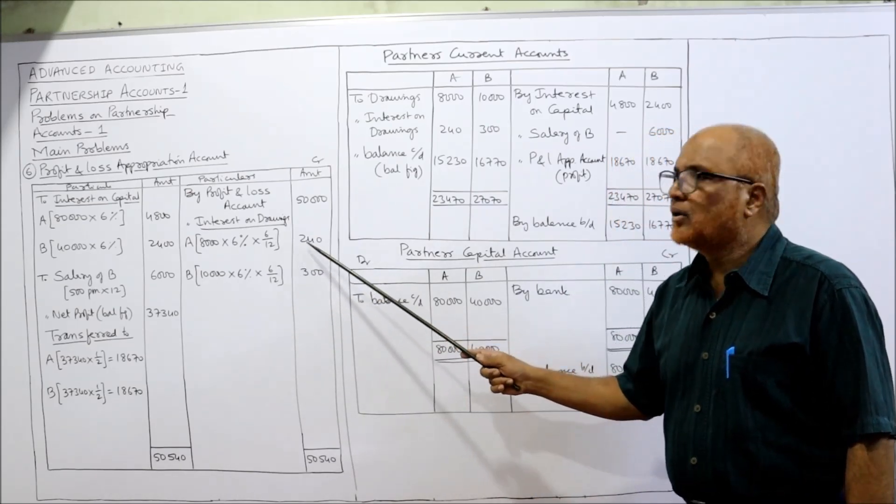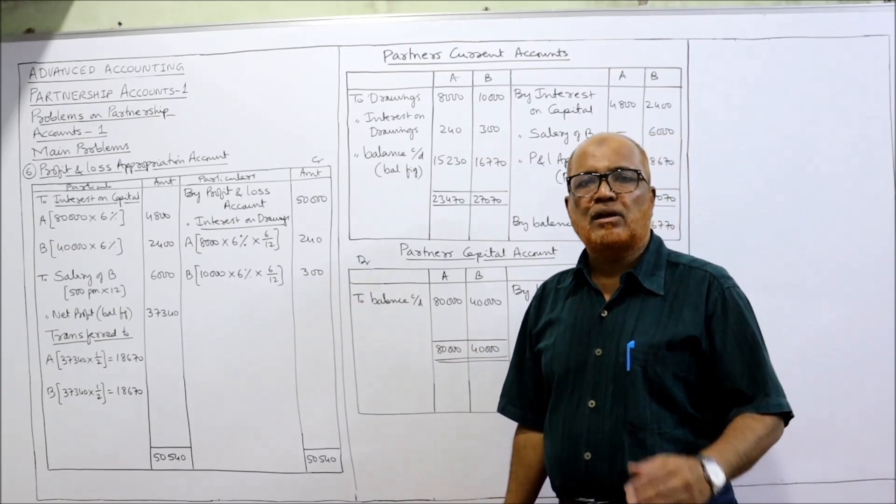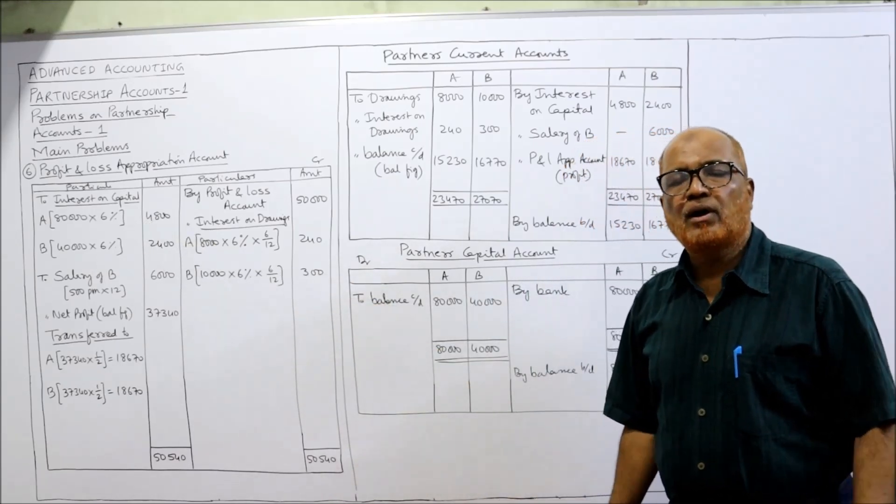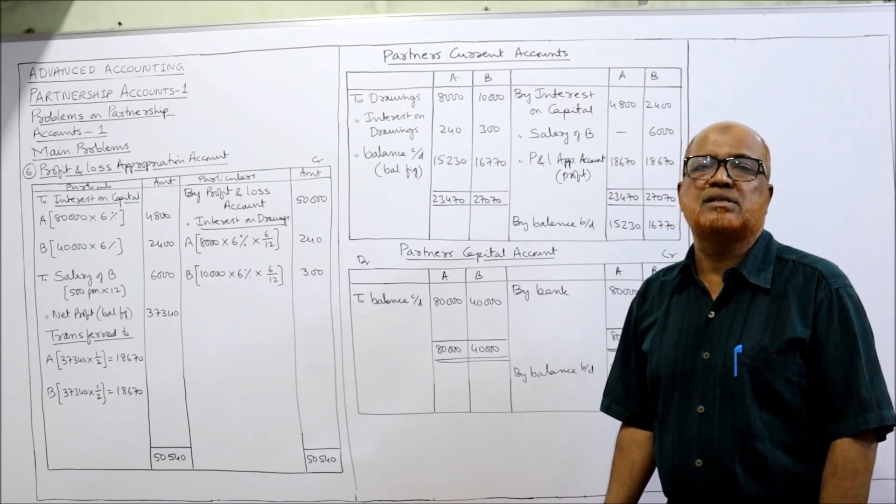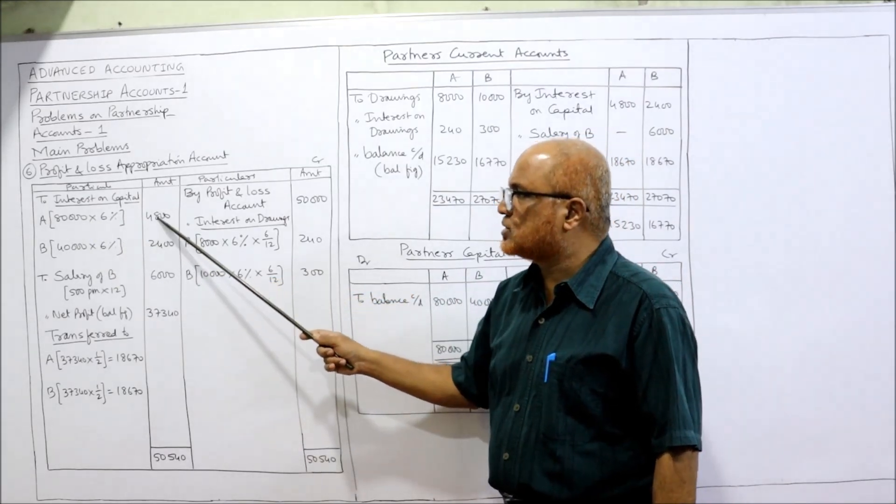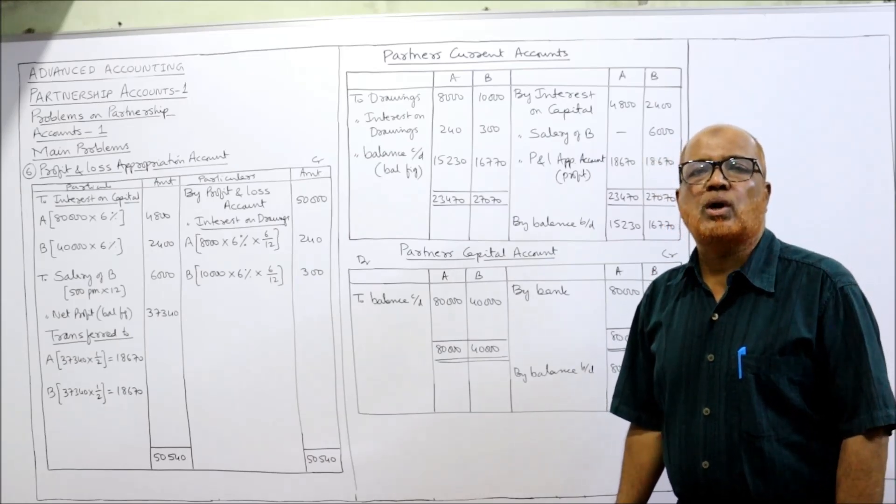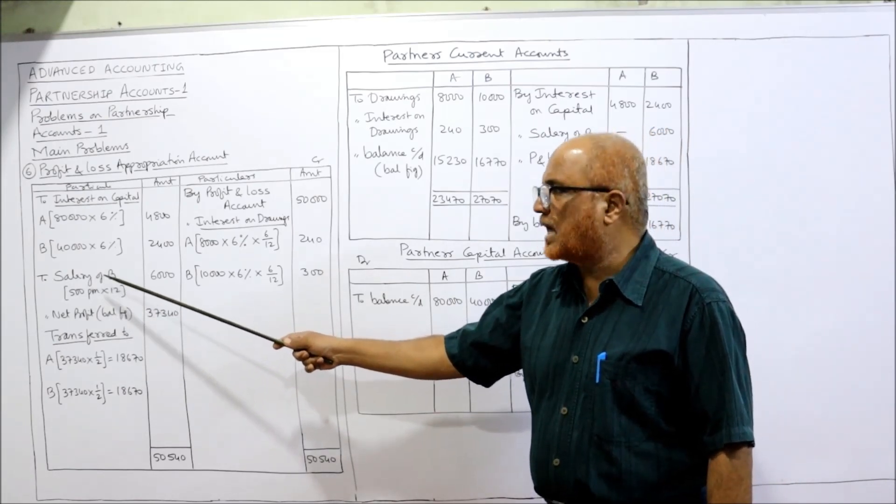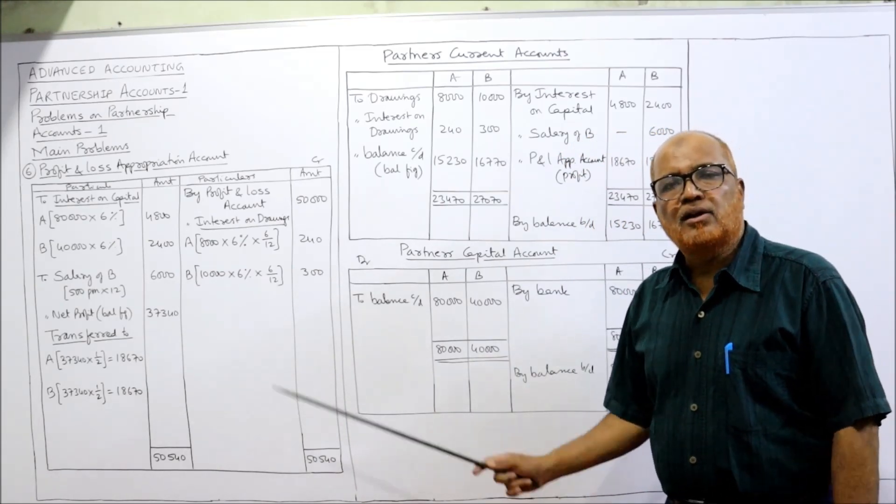Assuming the drawings are made in the middle of the year, so we calculate the interest for six months: 240 and 300. Now interest on capital will be allowed by the partners at 6%, but we have to calculate the interest on capital at the beginning of the year. So beginning capital 80,000 and 40,000 at 6%: 4,800 and 2,400. Apart from that, B is also entitled to salary at the rate of 500 per month, so salary of B: 500 per month into 12, 6,000.